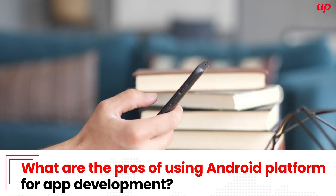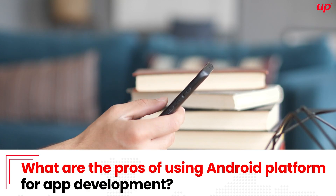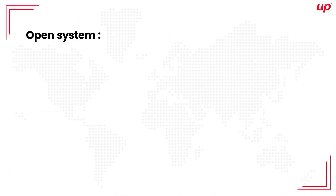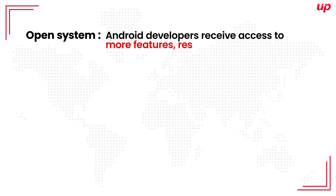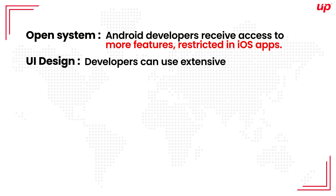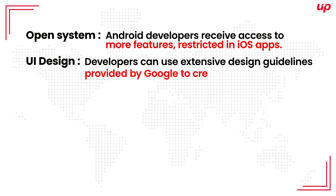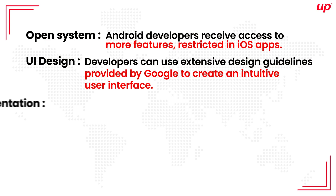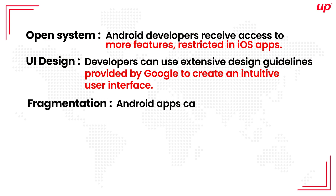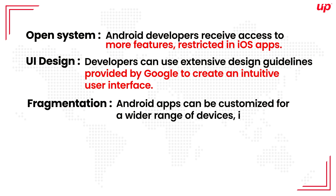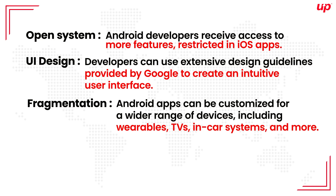What are the pros of using the Android platform for application development? First, the open system: Android developers receive access to more features which are restricted in iOS applications. For UI design, developers can use extensive design guidelines provided by Google to create an intuitive user interface. Fragmentation: Android applications can be customized for a wider range of devices.